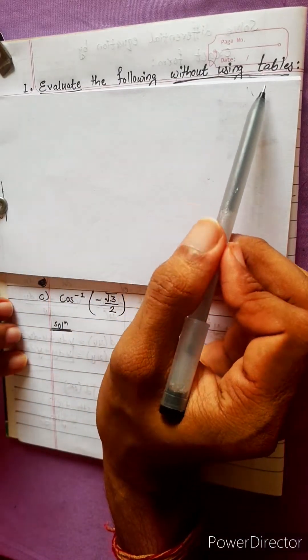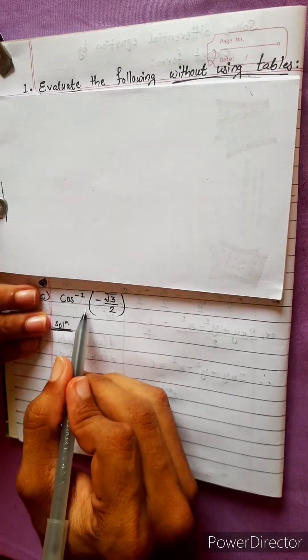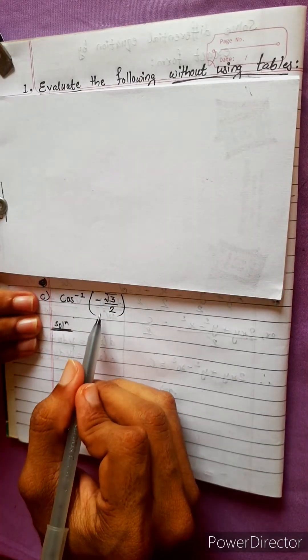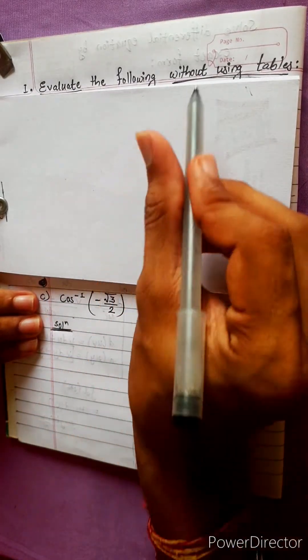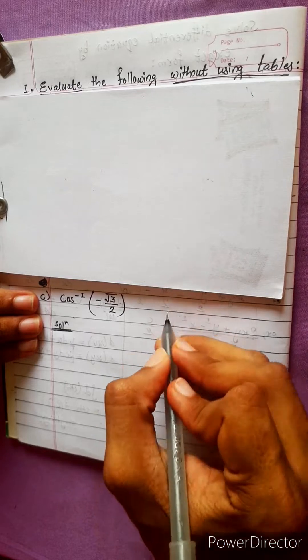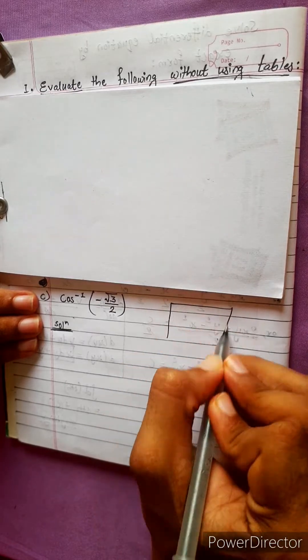Evaluate the following without using a table. Here we are — without using a table, we have to use the table. This is the table we have to use.